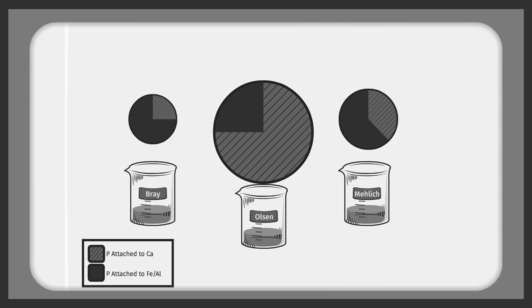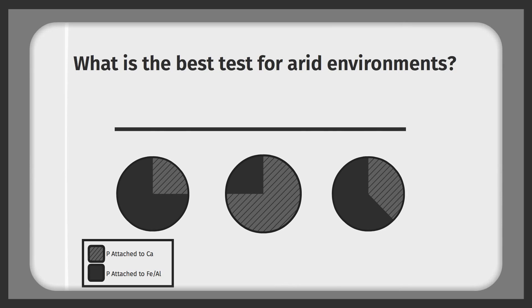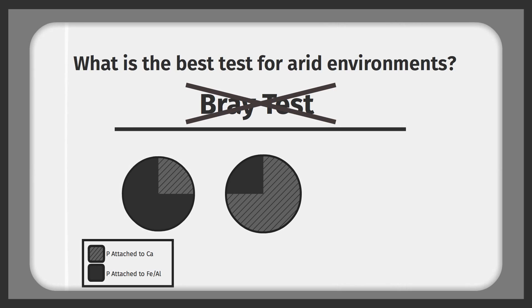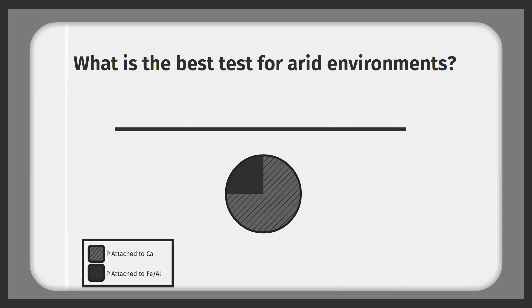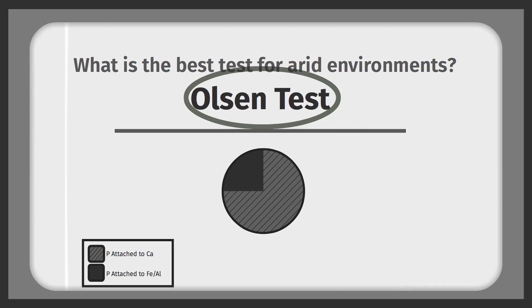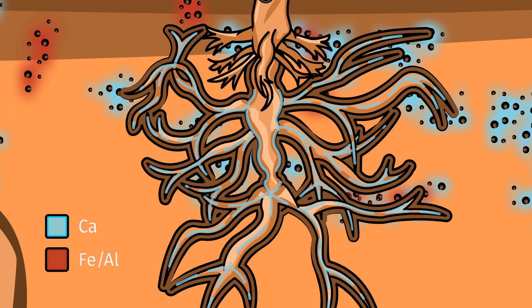To get an accurate sense of what phosphorus roots will be able to extract, ask the lab to use the extractant representative of the soil solution chemistry in arid environments, the Olsen test, even if this is a more expensive option.